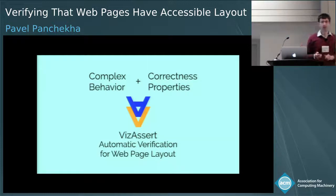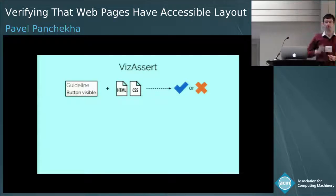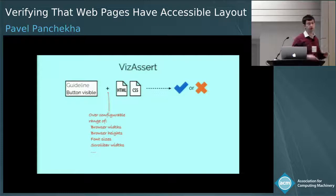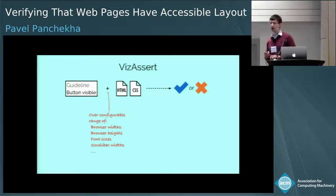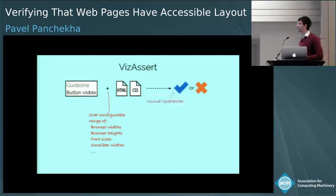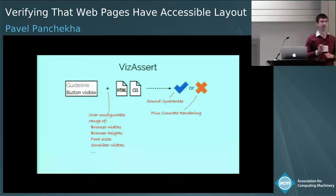At a high level, VisAssert takes as input an accessibility guideline — like maybe that the search button is visible — and a web page, and tells you whether or not the guideline holds for all possible renderings of that web page. By 'all possible renderings,' I mean over some user-configurable range of inputs like browser widths, font sizes, and maybe obscure ones like the width of your OS scroll bar. VisAssert will either give you a sound guarantee that the guideline holds, or provide a concrete counter-example rendering which it believes violates that guideline.